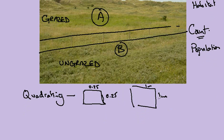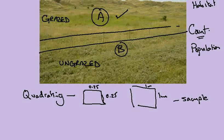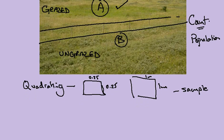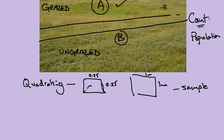The quadrat is used to sample the area. So we would take samples from area A and count the number of individuals inside our grid here. This would be repeated a number of times to gain an estimate of the population size.